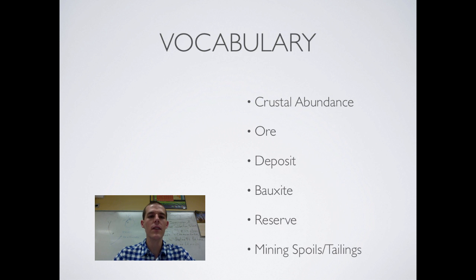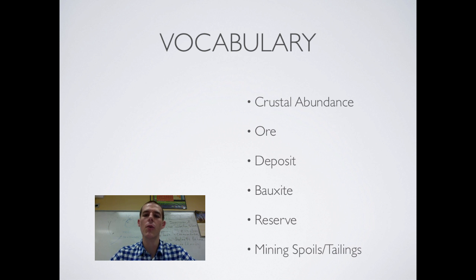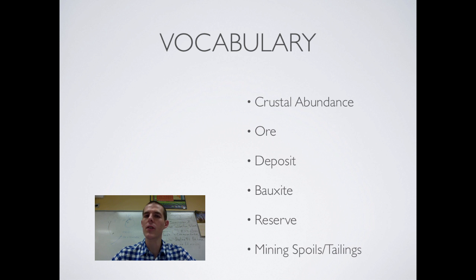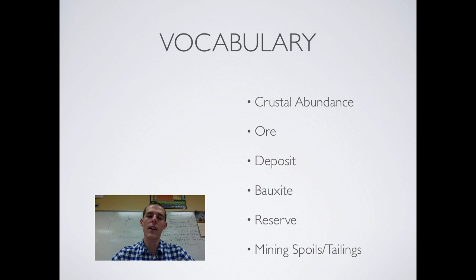So obviously today we are talking about mining. As we talk about mining, there are some important vocabulary words you need to be aware of. The first one is crustal abundance. Crustal abundance is just how much of a particular mineral is available in the crust of the Earth. Some things like gold have a very low crustal abundance, while some things like oxygen have a very high crustal abundance.